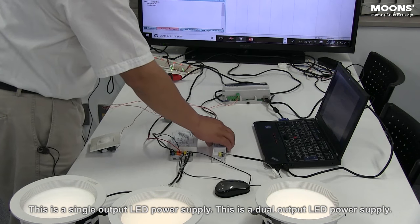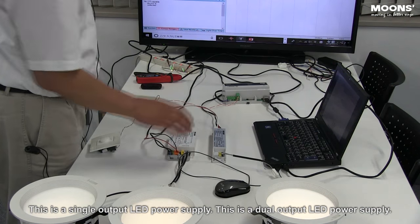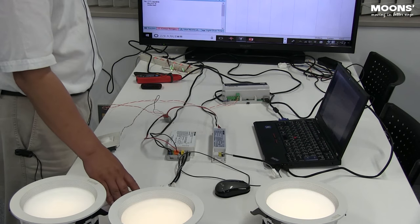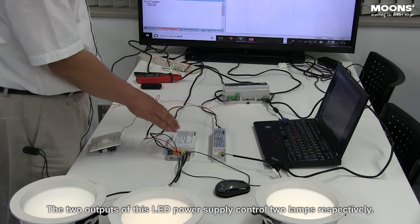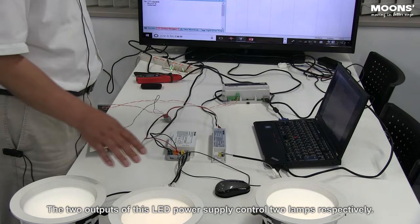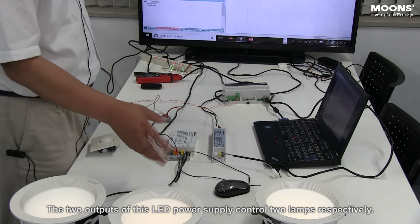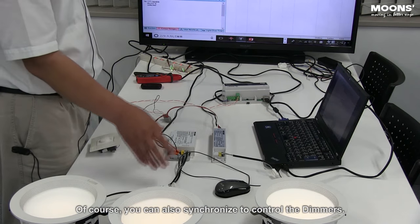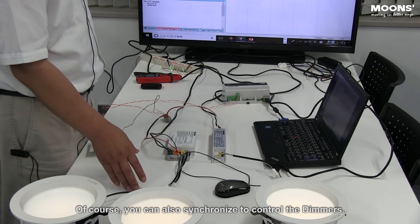This is a single output LED power supply. This is a dual output LED power supply. The two outputs of this LED power supply control two lamps respectively. Of course, you can also synchronize to control the dimmers.